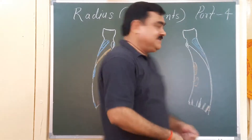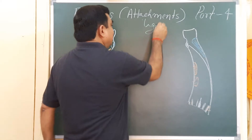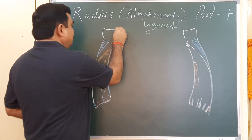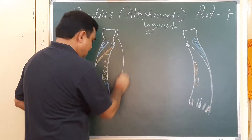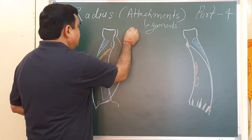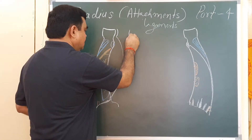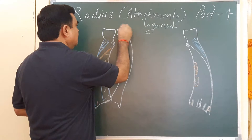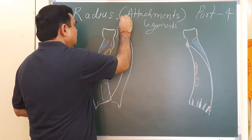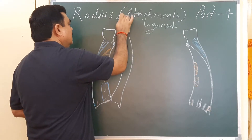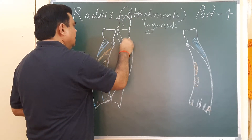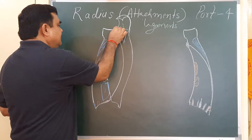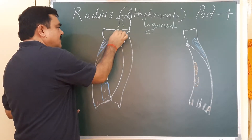Now we will discuss the attachment of the ligaments. Here is the position of the Ulna. This is the Ulna. Here is the attachment of the structures. Here is the annular ligament, which attaches with the radial notch of the Ulna here.